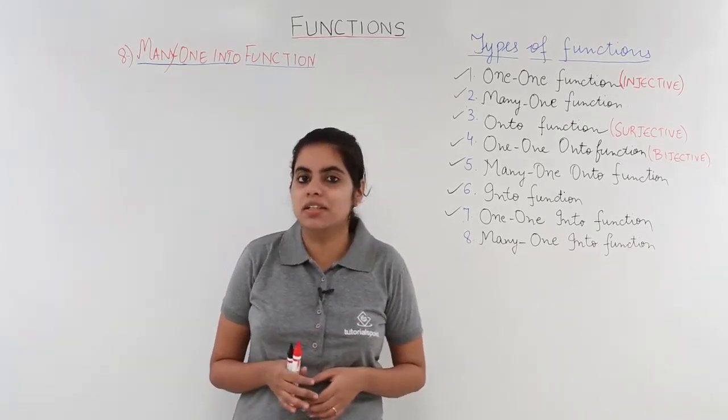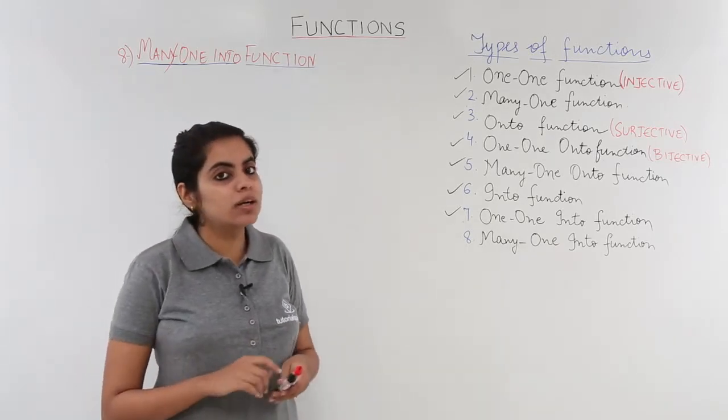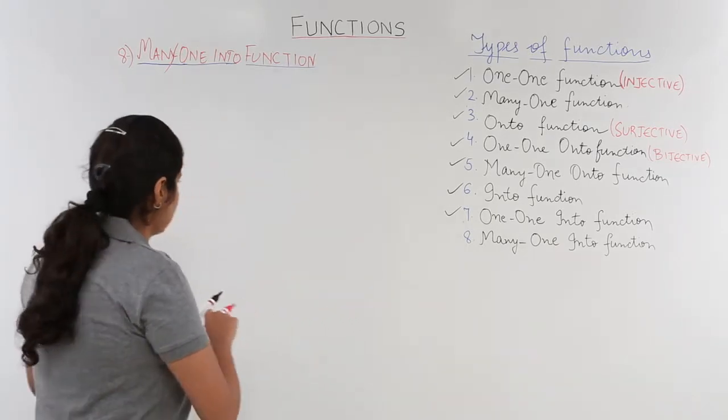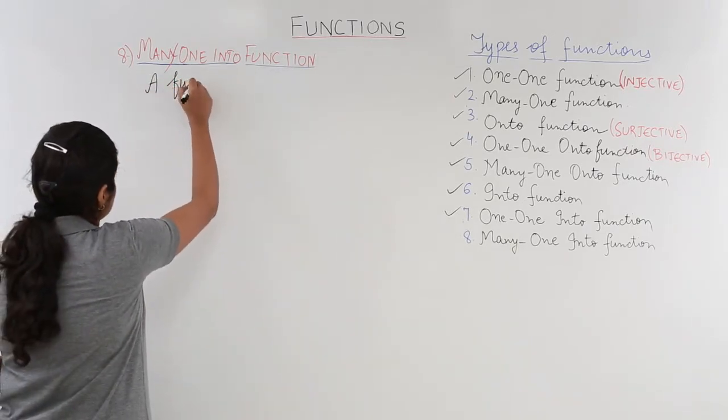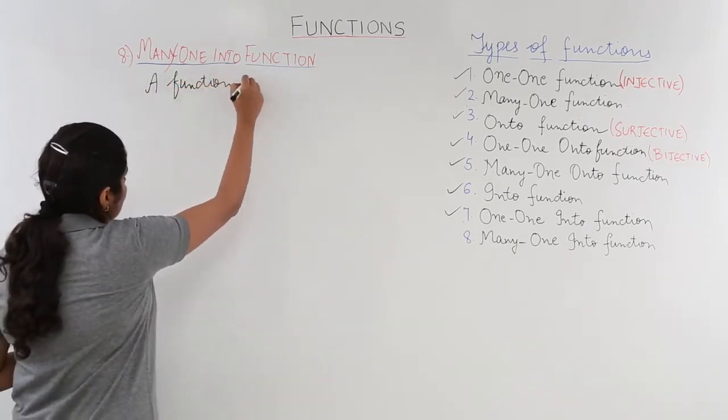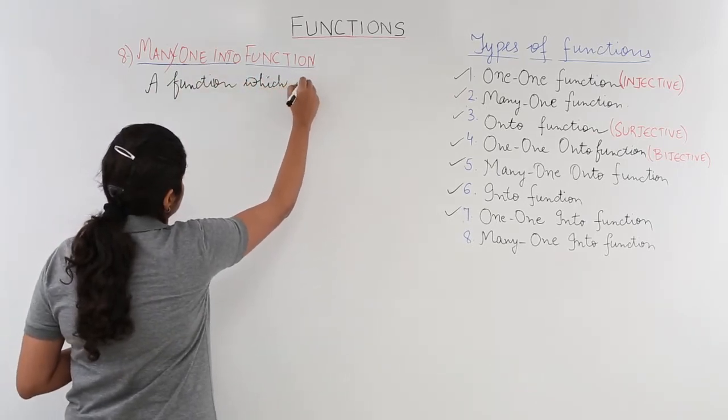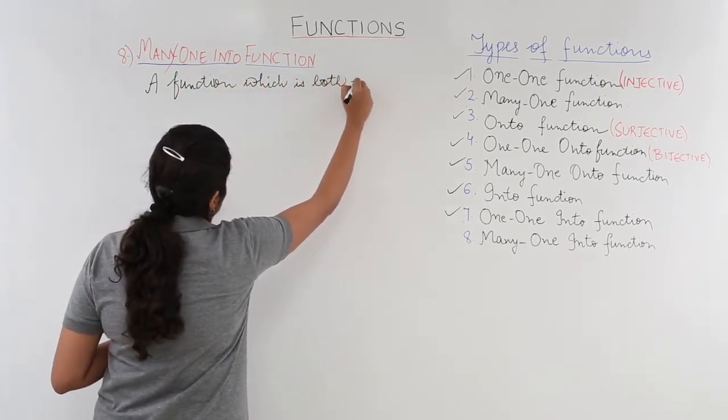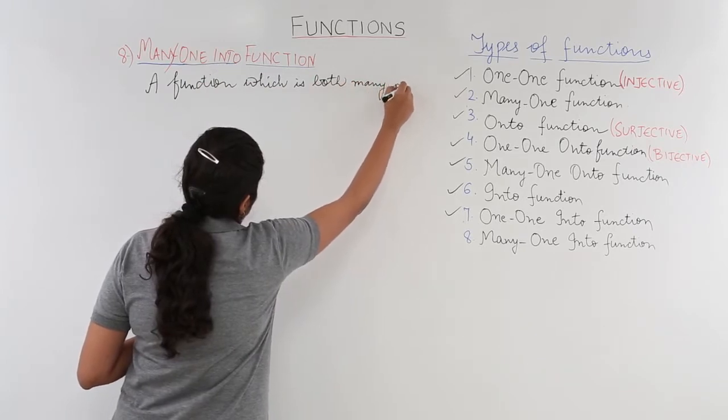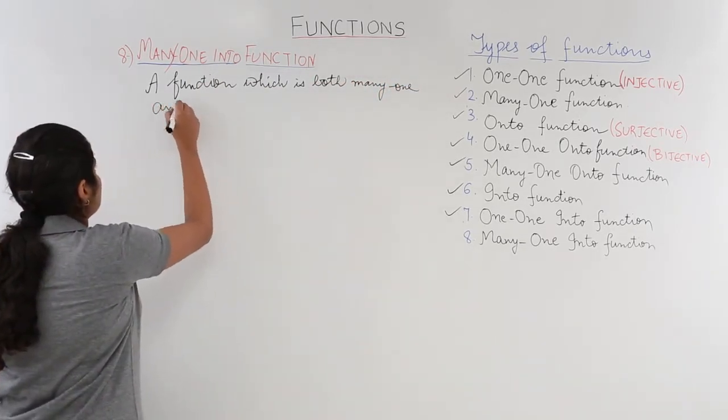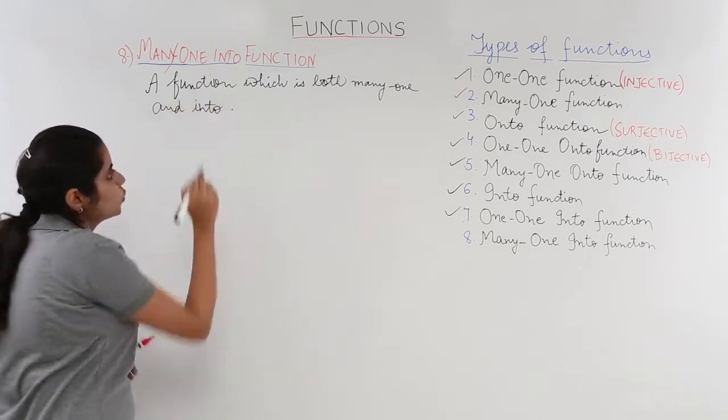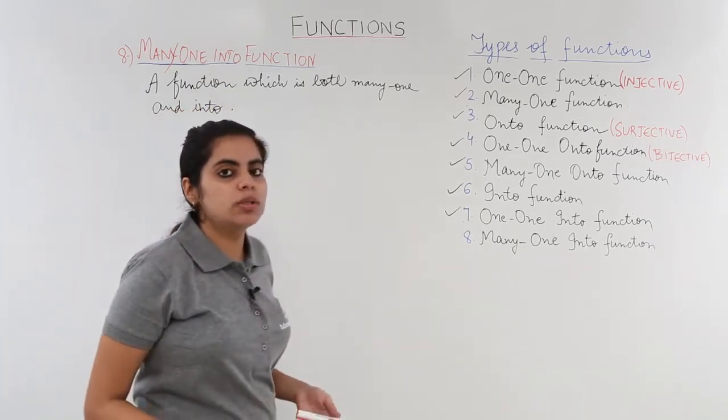Let's get started by writing the definition and then see a working problem for the same. So the definition of many-one into function would go as: a function which is both many-one and into.